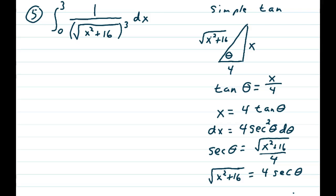So the process I call this is a simple tan. What I mean by that is I build a triangle where the tangent function is simple—simply being the x, which is the square root of x² in that problem, and the square root of 16 is 4. So I want to make tan θ equal x/4. I build my triangle with